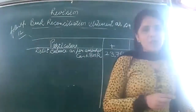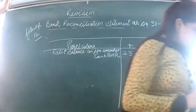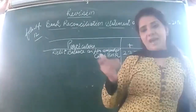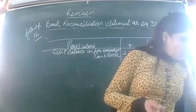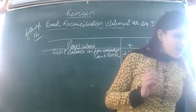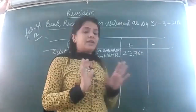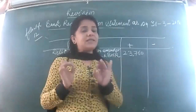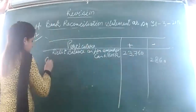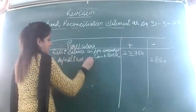Let's read the items now. Rupees 2,860 entered in the cash book as paid into bank, but not yet credited by bank — the bank will credit it the following day. So, cash deposited into bank but not yet credited by bank — I will write rupees 2,860 on the positive side.